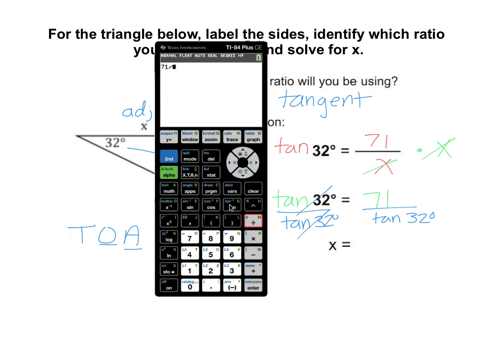71 divided by tangent 32, close the parentheses, hit enter, and there's our answer.